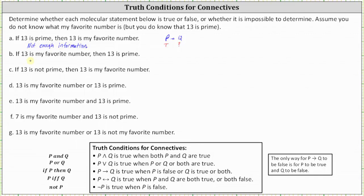For part B: If 13 is my favorite number, then 13 is prime. Again, we have an if-then statement in the form of if P then Q. We don't know whether P — 13 is my favorite number — is true or false, but we do know Q — 13 is prime — is true. When Q is true, if P then Q is true. So part B is true.